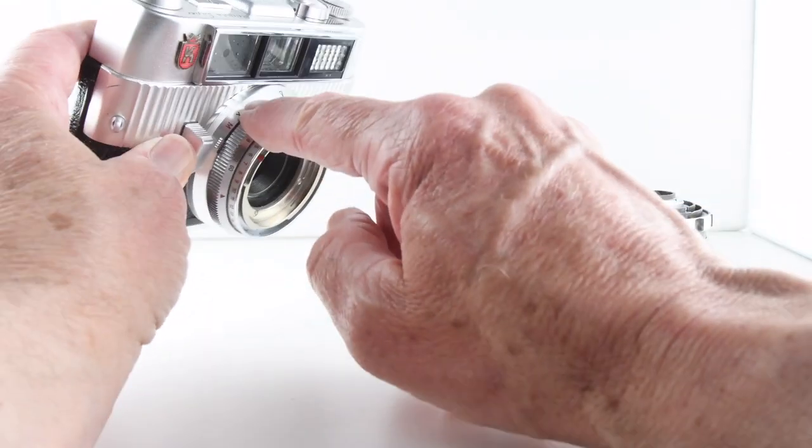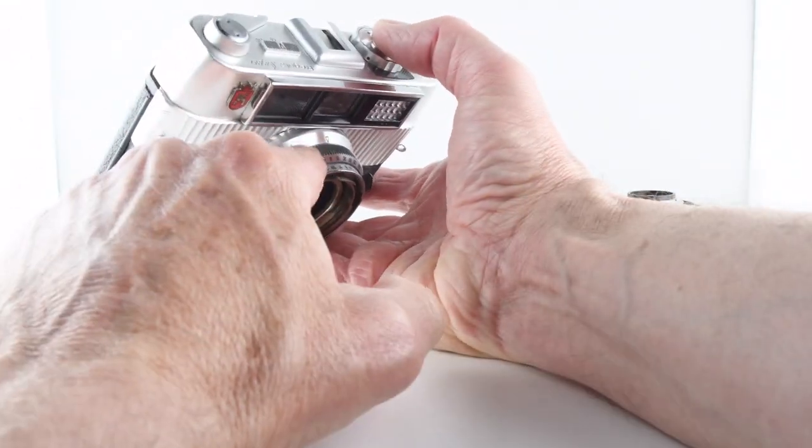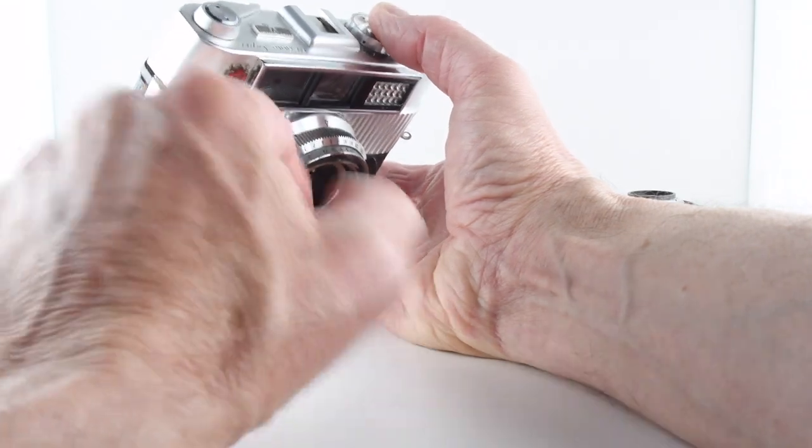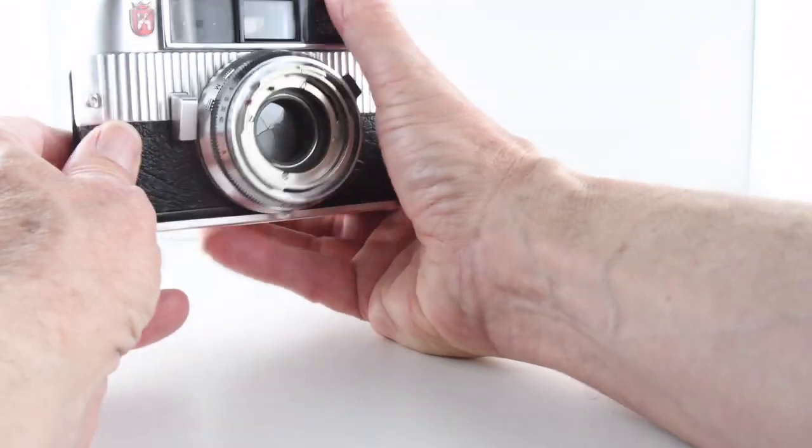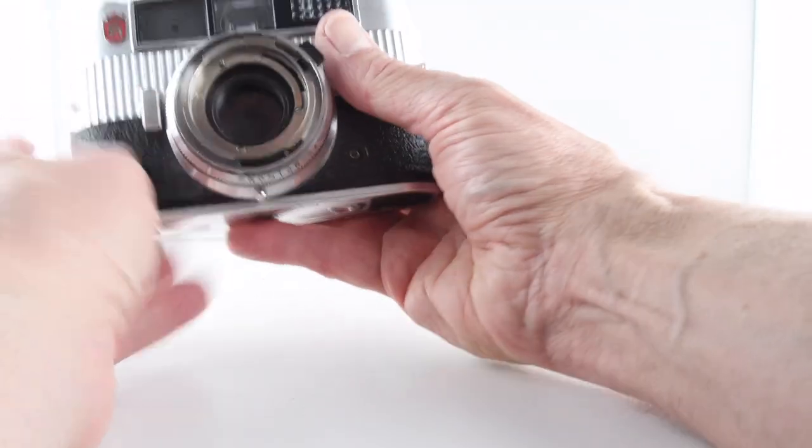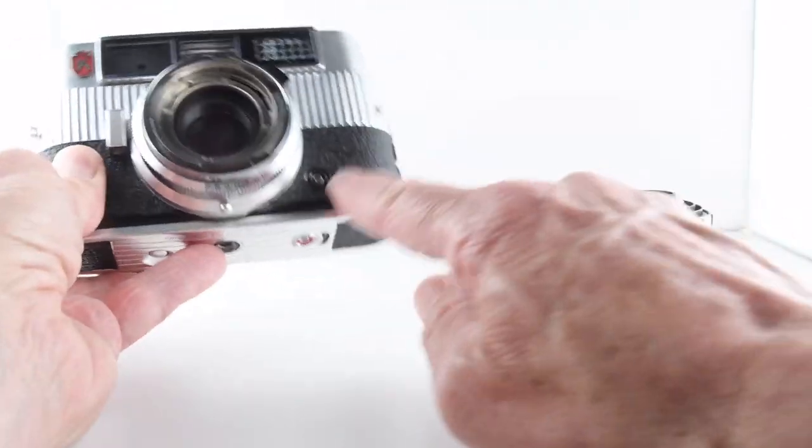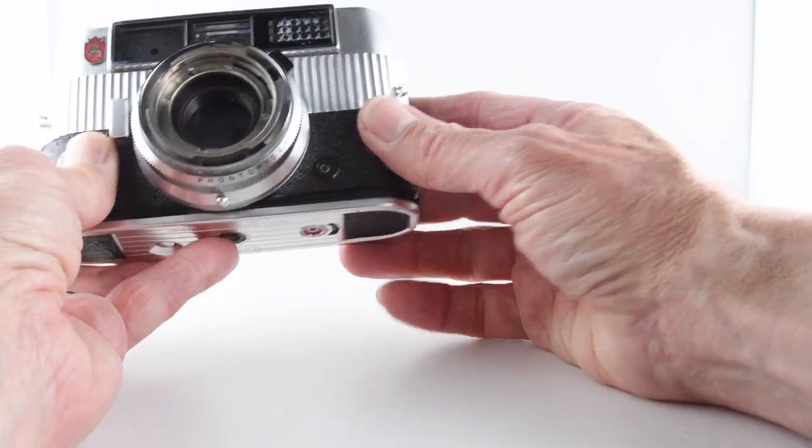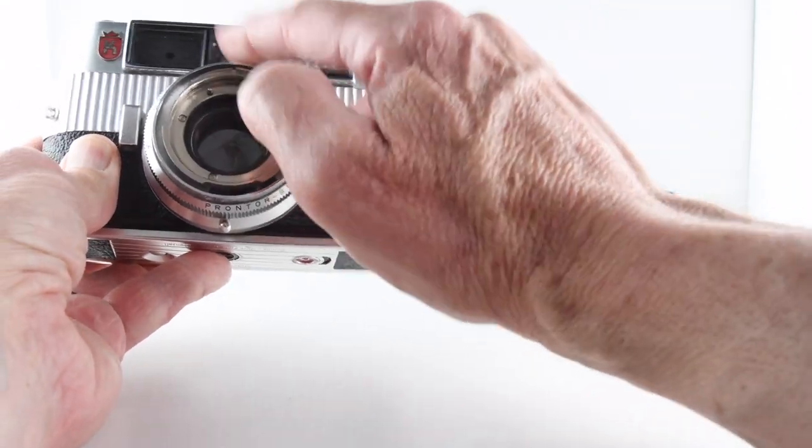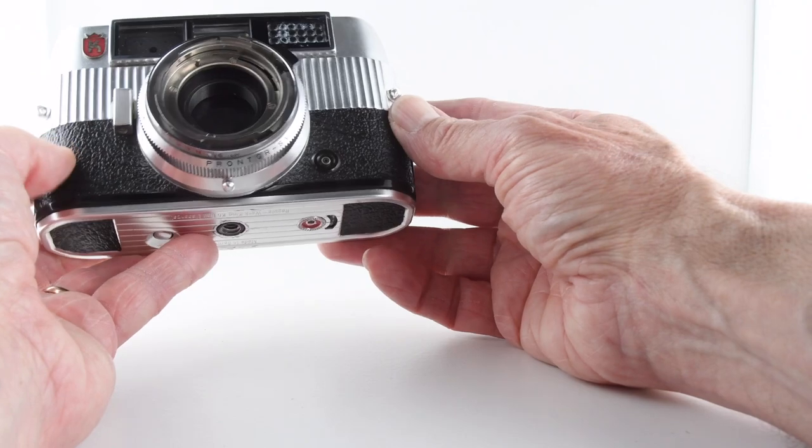Then we have a slider that allows us to choose what flash we're using, a shutter button, and then flash sync port, the window, the light meter, and our viewfinder/rangefinder windows.